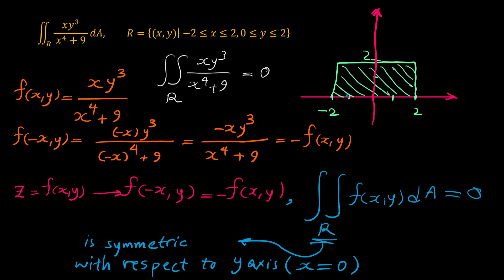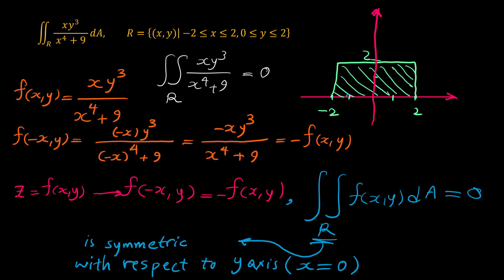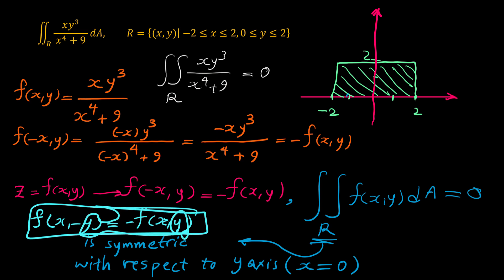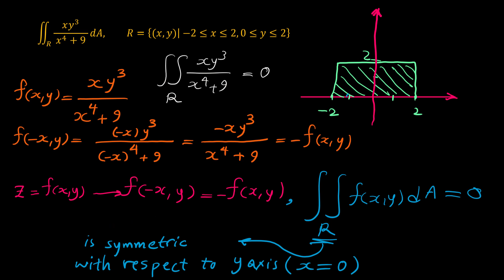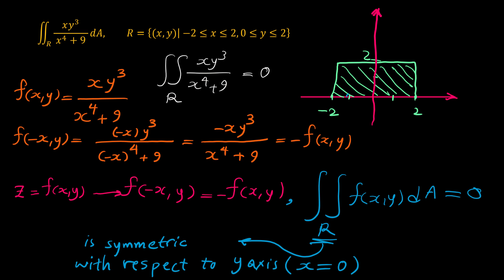There is an analogous condition for the y variable. If f(x, −y) = −f(x, y), the function is odd with respect to y. Then if the region is symmetric with respect to the x-axis (y = 0), the double integral of f over that region is also zero.